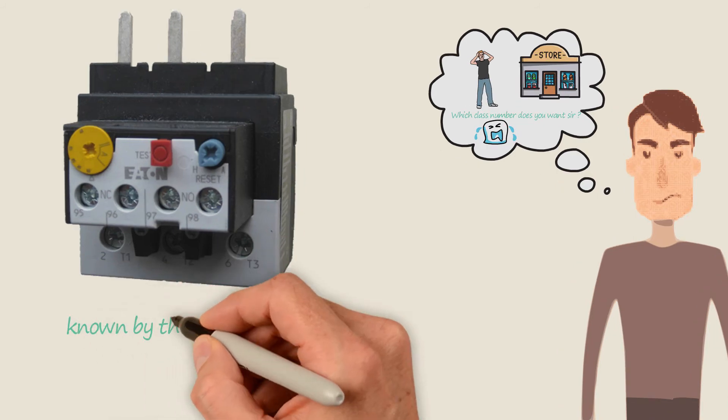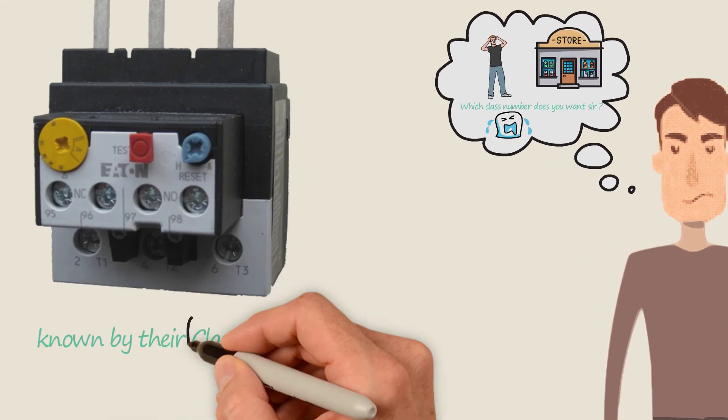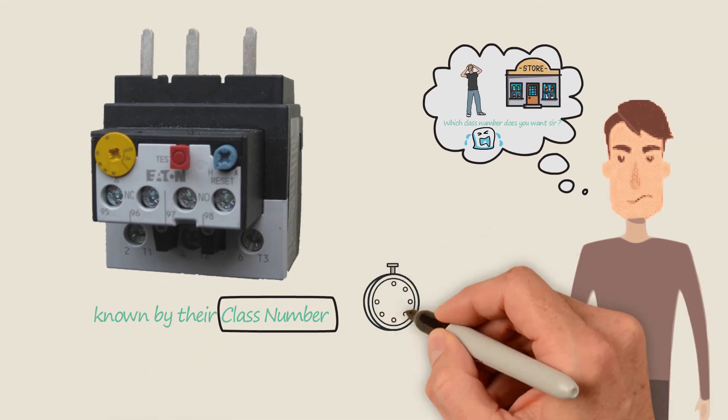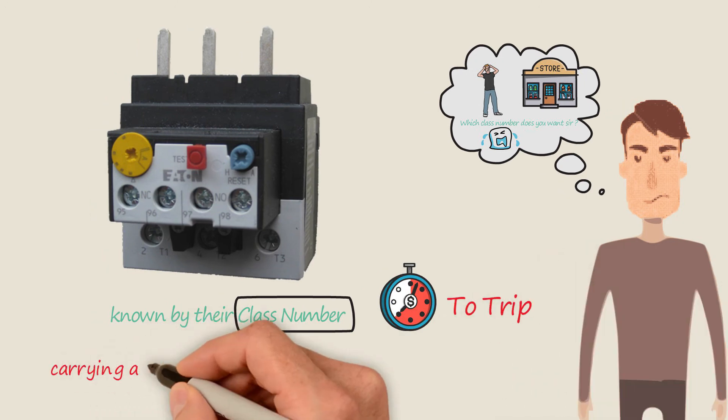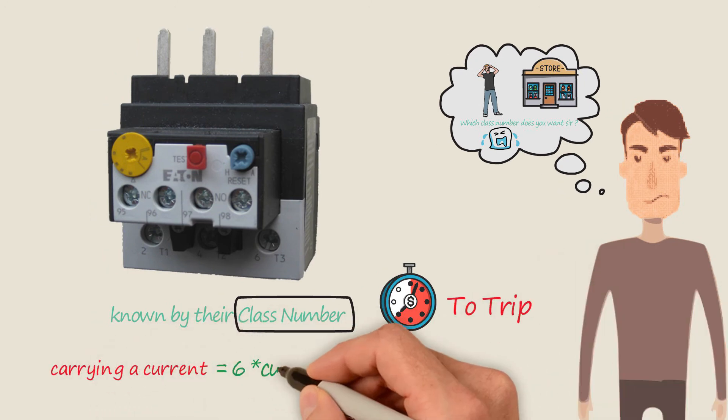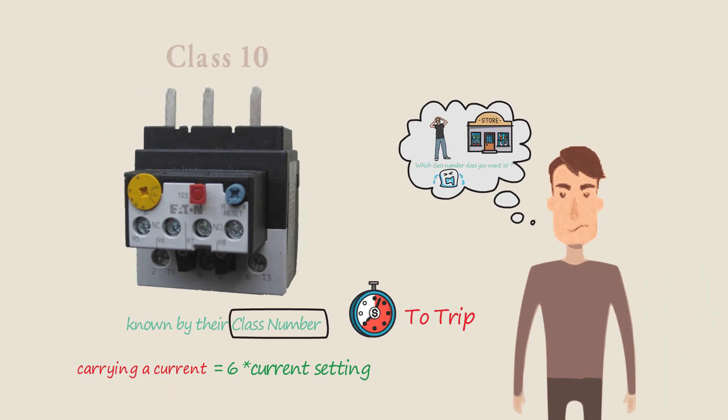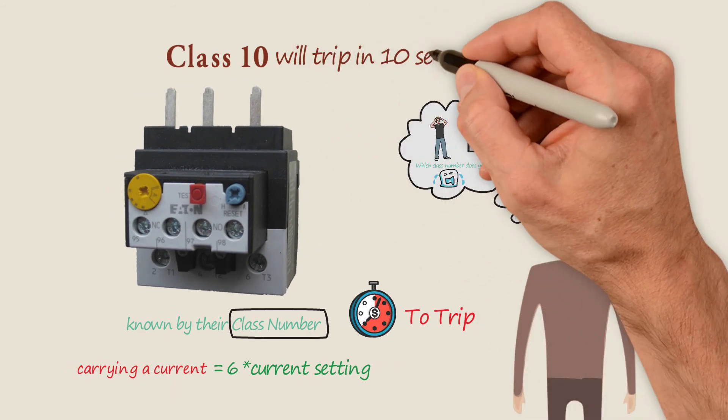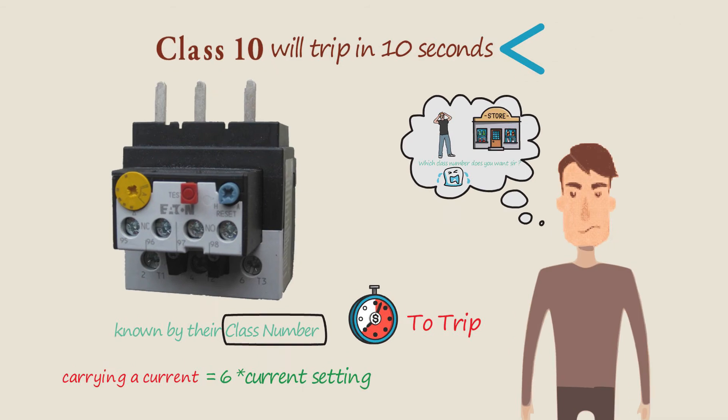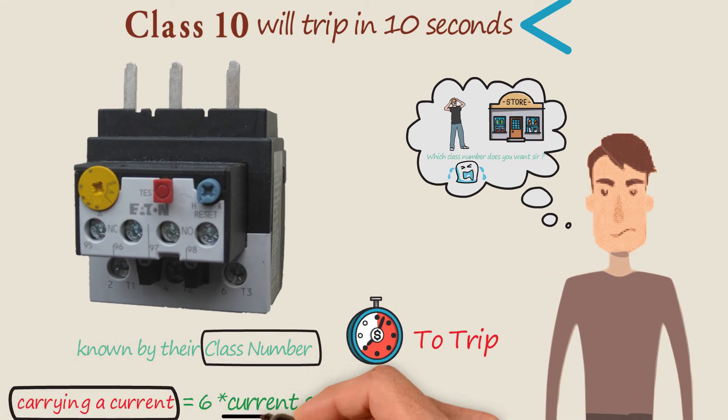Okay, overloads are known by their class number. The class number indicates how long an overload takes to trip when carrying a current equal to six times its current setting. A Class 10 relay will trip in 10 seconds or less when carrying a current equal to six times its rating.